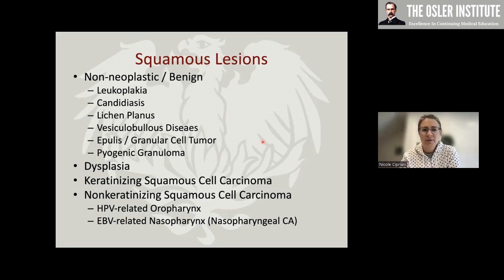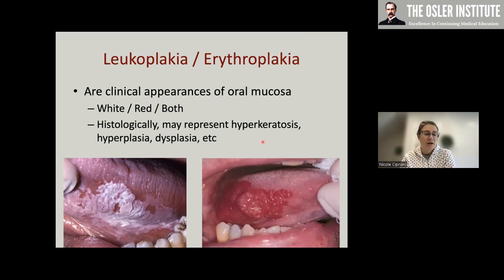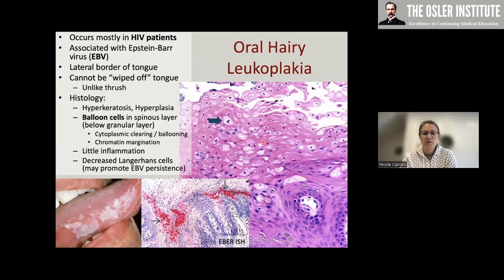To start with squamous lesions, we'll cover some non-neoplastic and benign entities and then the dysplasias and carcinomas. One important point: leukoplakia (white patches) and erythroplakia (red patches) are clinical appearances of mucosa — they are not histologic diagnoses. These often undergo biopsy to receive a histologic diagnosis: hyperkeratosis, hyperplasia, dysplasia, carcinoma, etc.